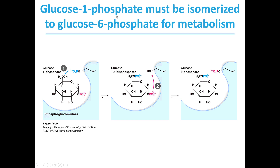Since we're producing glucose-1-phosphate with the glycogen phosphorylase reaction, we have to convert the glucose-1-phosphate into glucose-6-phosphate so it can be used for metabolism. This is completed by the enzyme phosphoglucomutase. Phosphoglucomutase is an enzyme that contains an active site serine residue that remains phosphorylated. In the presence of substrate, the serine residue will transfer its phosphate to the number 6 carbon of the glucose. The phosphate present on the number 1 carbon will then re-phosphorylate the serine residue so that as product leaves, the enzyme is ready to move to the next glucose-1-phosphate substrate.